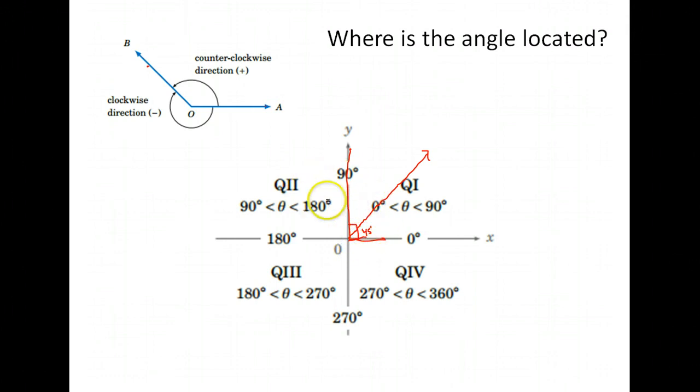As we continue on, each section is made up of 90 degrees. So this next section would be everything between 90 and 180 degrees. As we continue around the circle, quadrant 3 goes from 180 to 270 degrees.